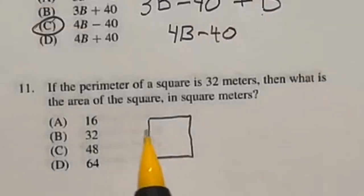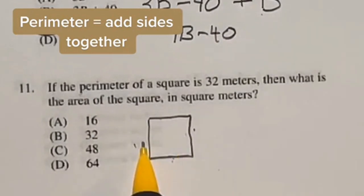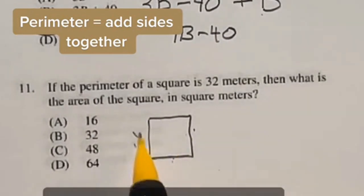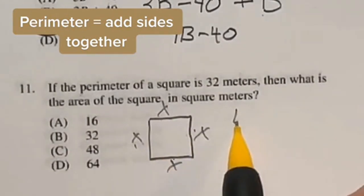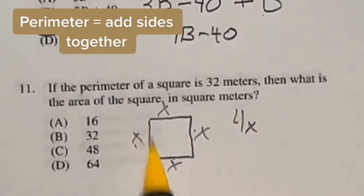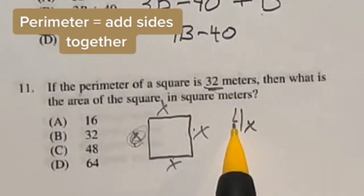For number 11, you need to know two formulas: the formula for perimeter and formula for area of a square. So perimeter is just when you add up all the sides together. Well, in a square, all four sides are the same. So essentially, you have this side plus this side plus this side plus this side, meaning that you would have four sides altogether. So if I wanted to know what one of these sides are, I can just take the perimeter and divide that by four.